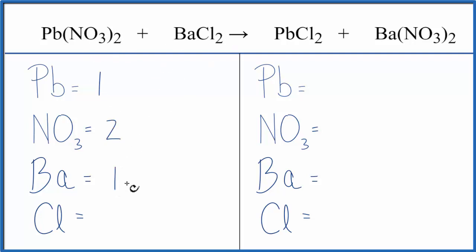Barium is one, and then we have two chlorines. On the product side, one Pb, and here's that NO3, the nitrate ion again. We have one of these times the two, so we have two of those. Ba, we have one, and then Cl, we have two of those.